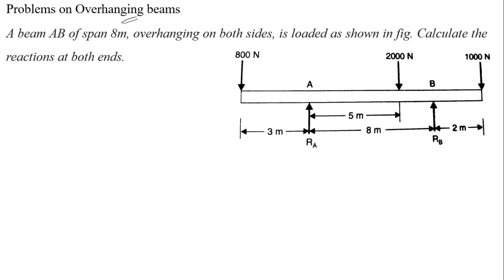The length of the beam is 8 meters and we have to calculate the reactions at both ends. At the ends of the beam, two supports are there — RA and RB — both are simply supported. Three loads are acting: 800 Newton, 2000 Newton, and 1000 Newton. We have to calculate reactions RA and RB.